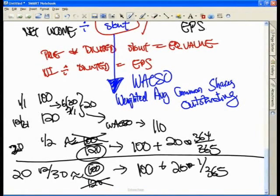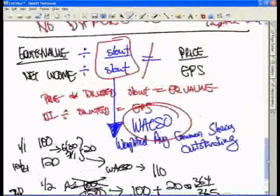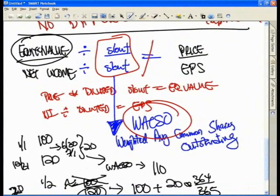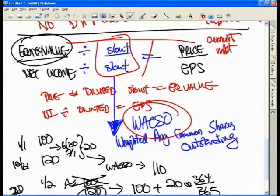That is how the accountants calculate the diluted shares outstanding number to go from net income to earnings per share. That is our WACSO calculation. However, when we calculate our current shares outstanding for our equity value, what are we always trying to capture? We are always trying to capture current valuation, current market value.